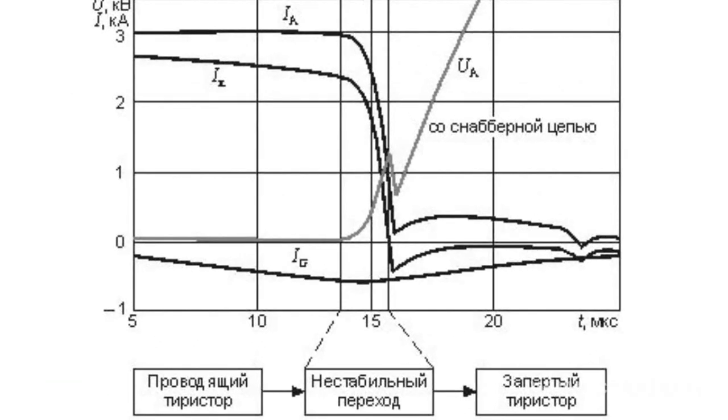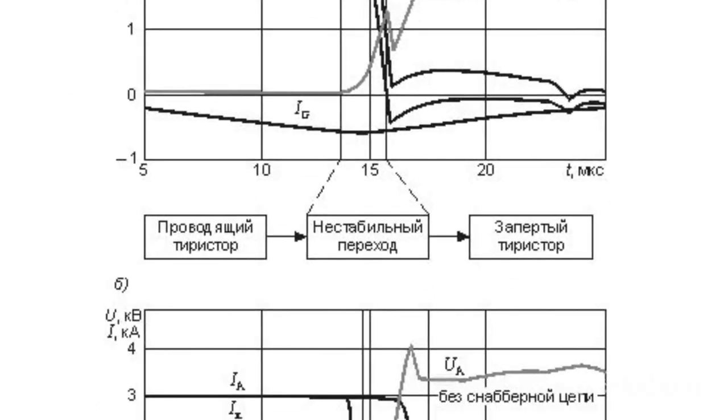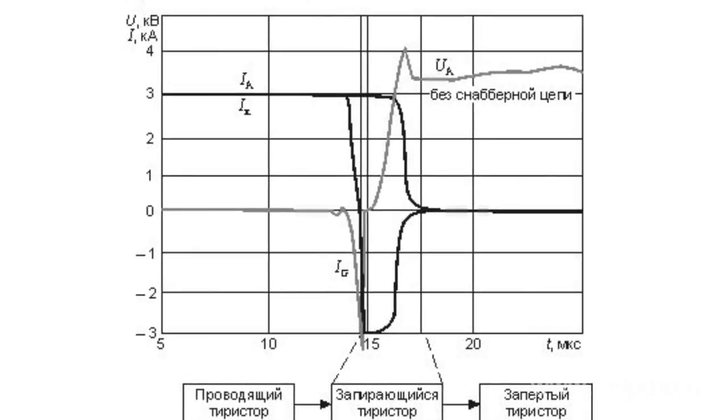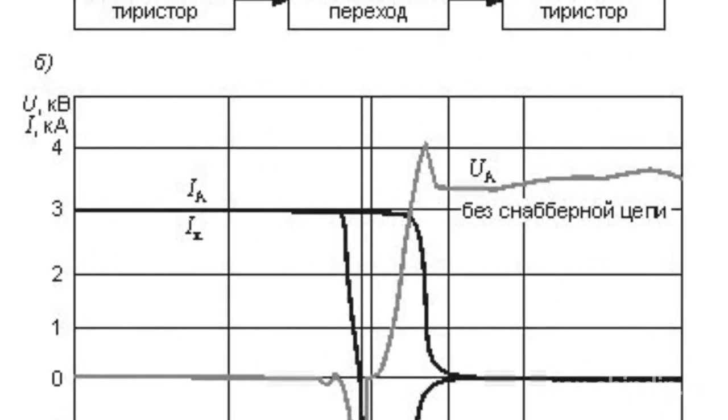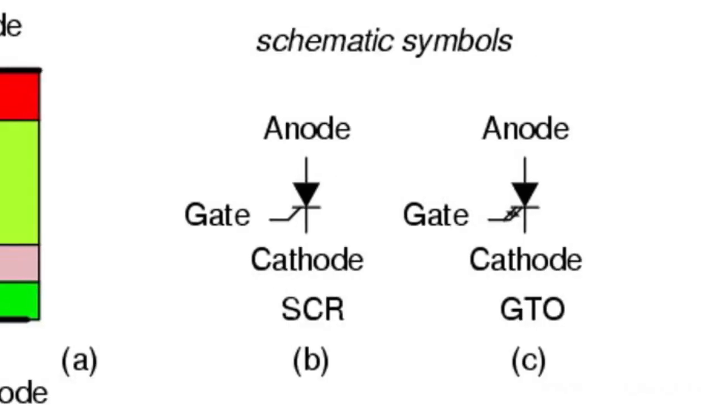In GTO thyristors, turn-on is accomplished by a positive current pulse and turn-off by a negative voltage pulse. GTO thyristors have the same four-layer structure as conventional thyristors.